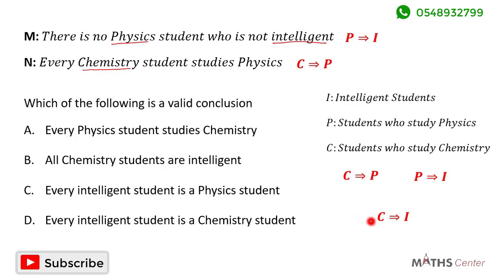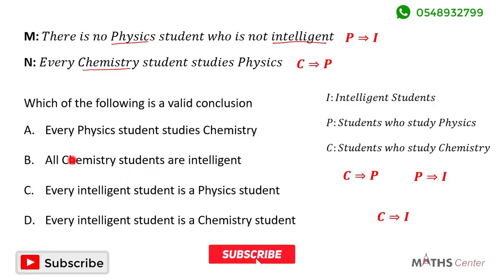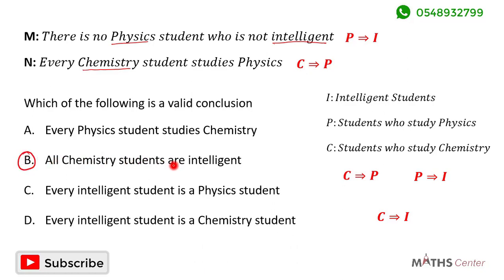If C implies P and P implies I, then one valid conclusion we can draw is that C implies I. Remember that C represents students who study chemistry and I represents students who are intelligent. So if C implies I, then it means that all chemistry students are intelligent. When we look through the options, we can see that that conclusion is B: all chemistry students are intelligent. This is the valid conclusion we can draw from these two statements.